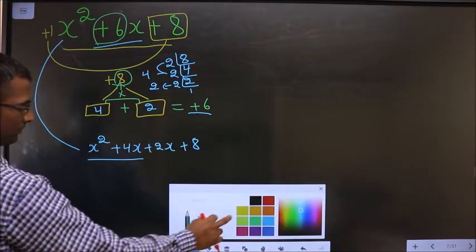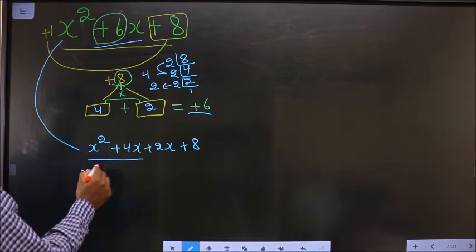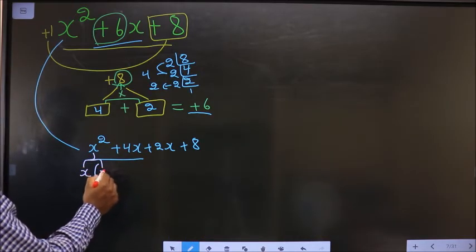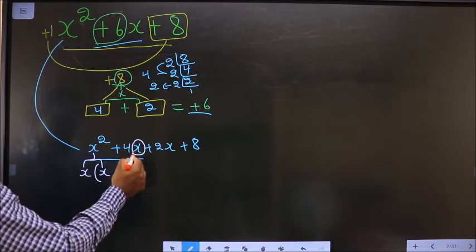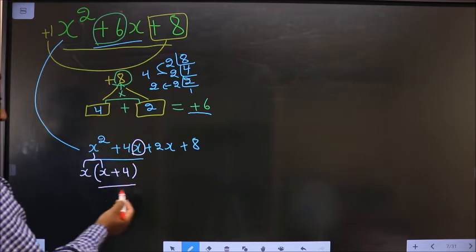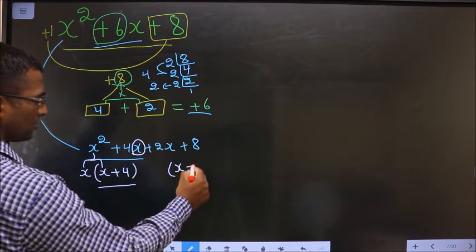X from x². One x is gone outside means inside is x. This x is gone out means left with 4. Here you got x + 4, means here also it should be x + 4.